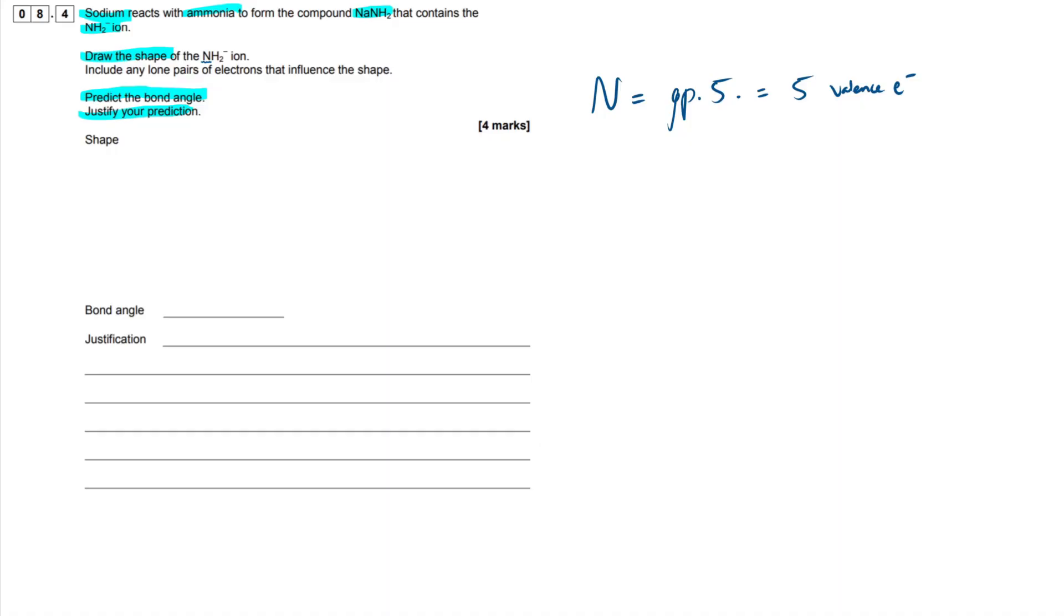So with nitrogen, what's normally the case is it's going to have 3 bonding pairs and 1 lone pair. That's just normally how it is, for example, like in ammonia. Now, what we have to pay attention to here is that within this ion right here, it has a minus charge. And that means that our nitrogen has gained an electron. So this means that our nitrogen ultimately has been transformed to have 6 valence electrons.